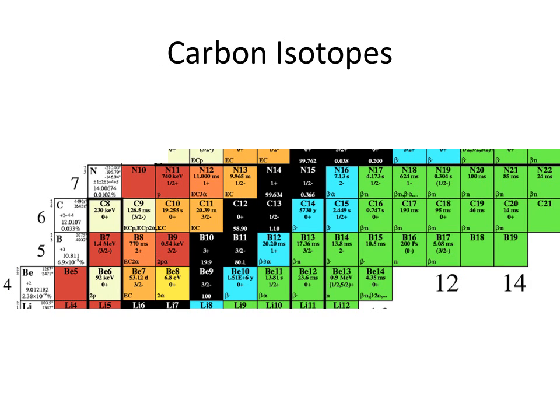Here's a broader picture of carbon isotopes. Carbon-12, 13, and 14 sit in the middle of these. The black squares are the ones that are stable — everything else is unstable. You can also see the half-life listed above. For most of these elements, the half-life — the amount of time it takes for half of that material to decay — is on the order of seconds to maybe even milliseconds. C20, for instance, has an incredibly rapid decay rate of only 14 milliseconds.